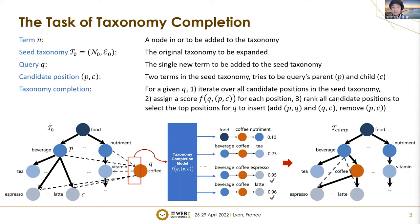Here are some terms in the task of taxonomy completion. A term N is a node in, or to be added to, the taxonomy. Each term typically has a surface name, like food, nutriment, beverage, and so on. A seed taxonomy T0, including a node set N0 and an edge set E0, is the original taxonomy to be expanded. A query Q is the single new term to be added to the seed taxonomy. A candidate position PC are two terms in the seed taxonomy — they try to be the query's parent P and child C. The task of taxonomy completion is: for a given query Q, the model iterates over all candidate positions, assigns a score F(Q,P,C) for each position, and ranks all candidate positions to select the top positions for Q to insert — adding two edges PQ and QC, and removing the edge between P and C if it exists.